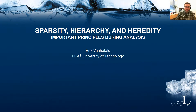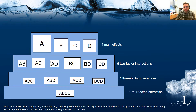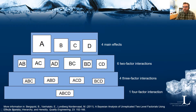I will start with an example first to explain the principles. Assume we have run a 2 to the 4 design, so we have 4 factors each on 2 levels. We can estimate 15 effects: 4 main effects, 6 two-factor interactions, 4 three-factor interactions, and 1 four-factor interaction. In this figure, the size of the white boxes is a way to show the relative size of the effect estimates. In this case, the estimated effect of A is the largest of these 15 effects.